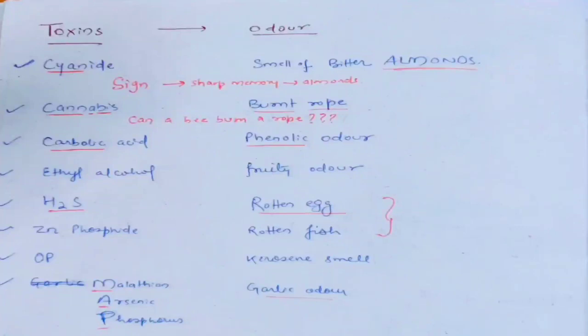This is a short video to help you remember toxins and their corresponding odors. Let's start — the first is cyanide poisoning. From cyanide, correlate the word 'sign.'